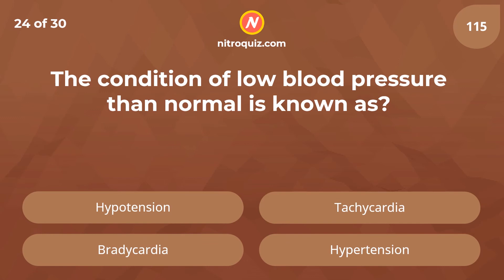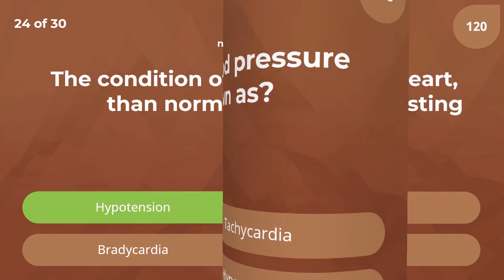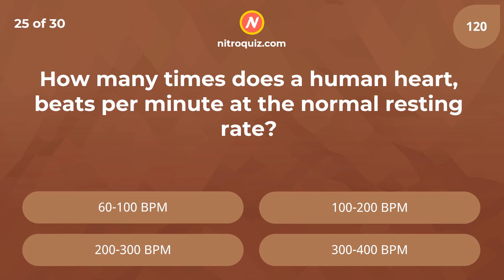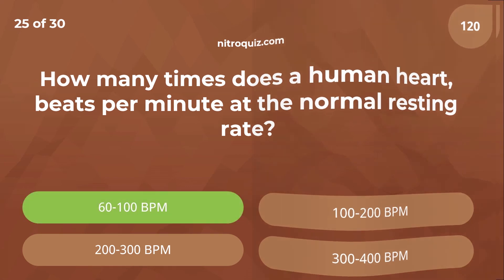The condition of low blood pressure than normal is known as hypotension. How many times does the human heart beat per minute at the normal resting rate? Answer is 60 to 100 beats per minute.